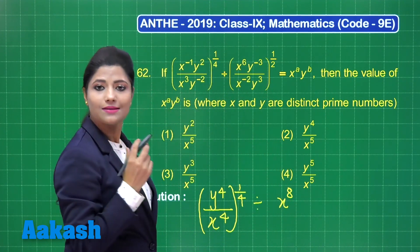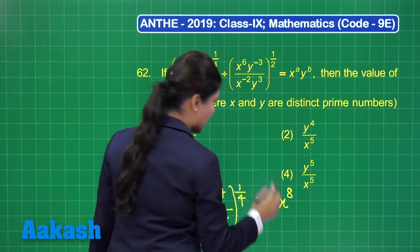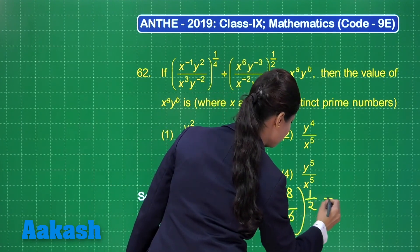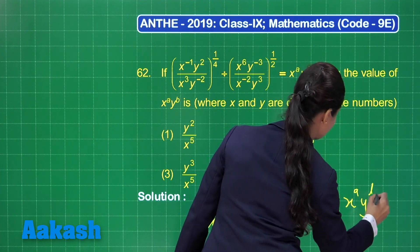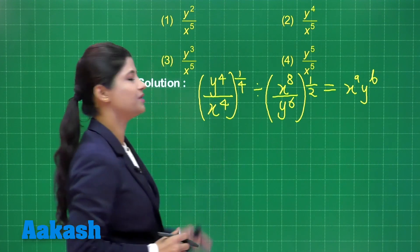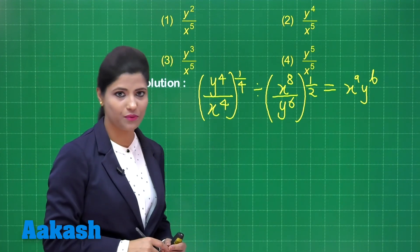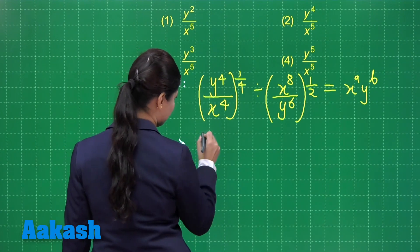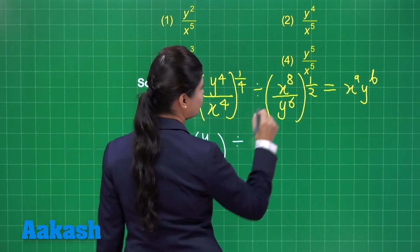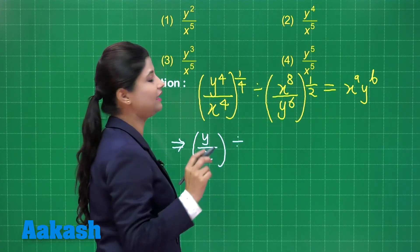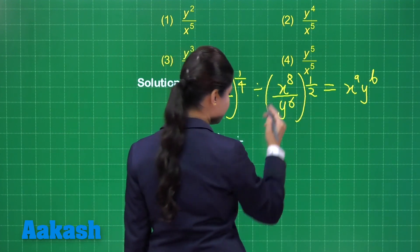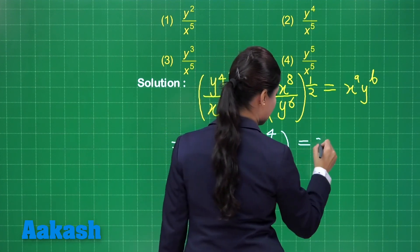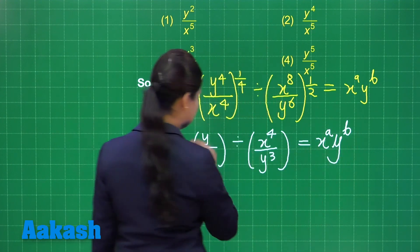In the numerator I have y raised to the power minus 3, brought to the denominator it becomes y raised to the power 3 plus 3, that is 6, whole raised to the power 1 by 2. This equals x^a · y^b. On the left hand side, y⁴ upon x⁴ whole raised to the power 1 by 4 distributes the power equally, resulting in y upon x, divided by x⁸ upon y⁶ whole raised to the power half, which distributes to give x⁴ upon y cube.